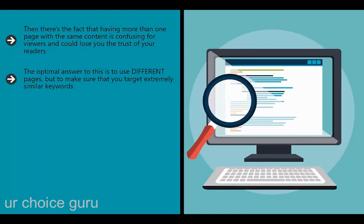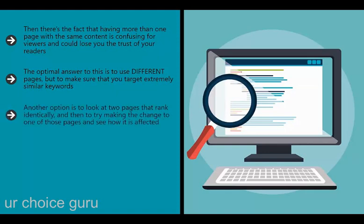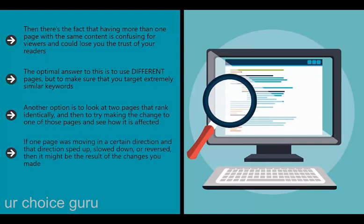The optimal answer is to use different pages but target extremely similar keywords. Use a keyword research tool like KW Finder (kwfinder.com) and target keywords with similar search volumes and similar KD (keyword difficulty) ratings. Another option is to look at two pages that rank identically and then try making the change to one of those pages. This is a slightly better strategy because you're starting from a similar place, and you can use historical data to forecast how pages should have behaved if you hadn't made changes.